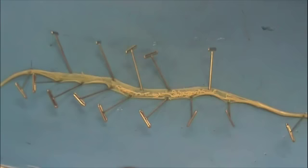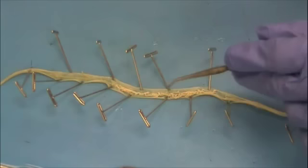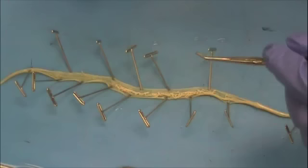The string-like structures that you see spread throughout the posterior end are the sperm ducts. The Ascaris is a very prolific reproducer.